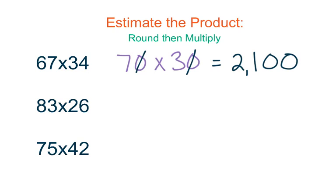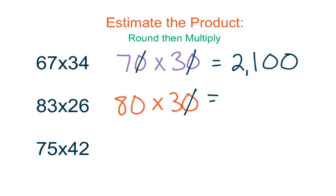My next problem is 83 times 26. I'm going to round first. 83 rounds to 80 and 26 rounds up to 30, so I would multiply 80 times 30. I cross my zeros out and place them in my product. 8 times 3 is 24, so my estimate is 2,400.